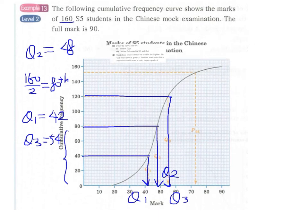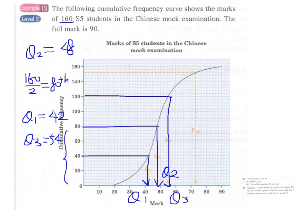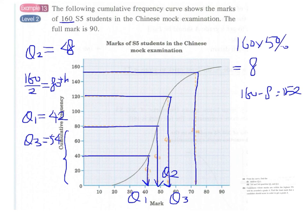So we have to look for the top 5% of the marks. If we multiply 160 by 5%, we have 8 students. So we just look up the 152nd value. We subtract 160 by 8. Then we read from 152. And then we can read the data here. And this is about 73 marks.